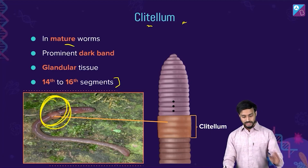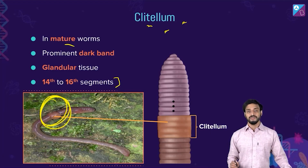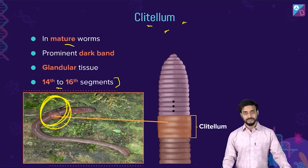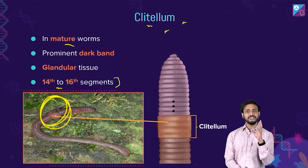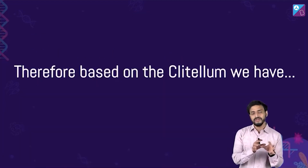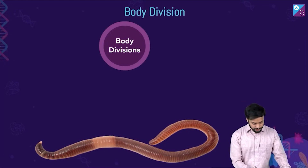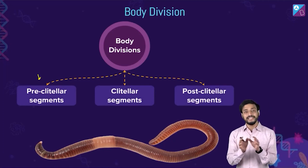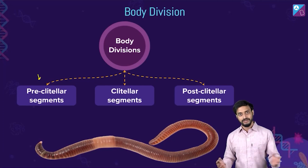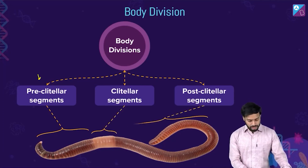The clitellum is very important for your exam - often questioned, located in the 14th to 16th segment. Based on the clitellum, we can divide the body into different parts: pre-clital segments, clital segments, and post-clital segments. These are the three body divisions of the earthworm.